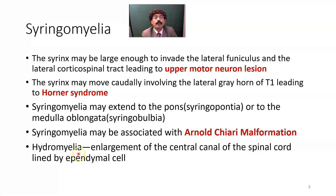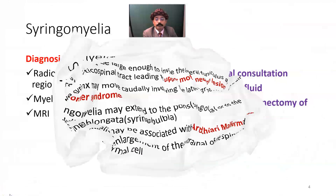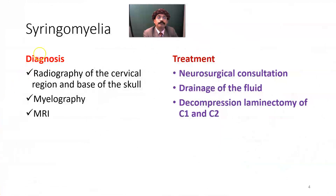Hydromyelia is a condition in which there is enlargement of the central canal of the spinal cord, lined by ependymal cells. To diagnose syringomyelia, we rely on the clinical features, radiology of the cervical region and base of the skull, myelography, and MRI.